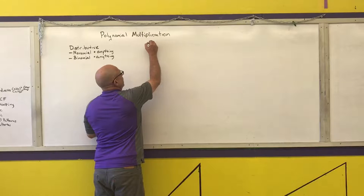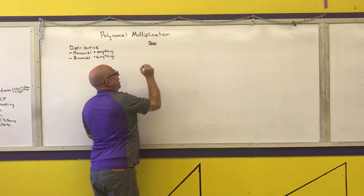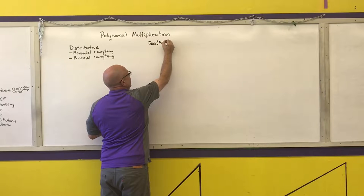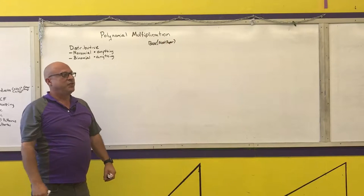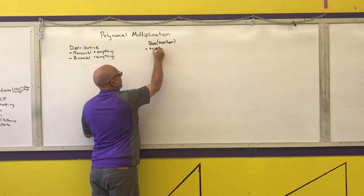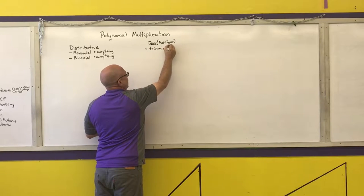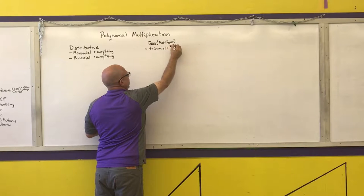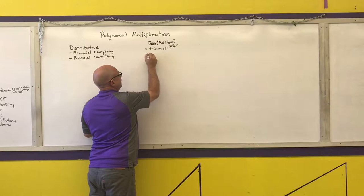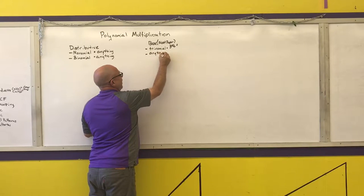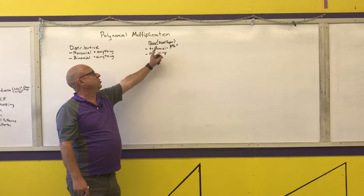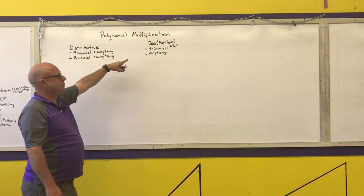The next method is the box method. The box method uses the most paper. My recommendations for using the box method are any trinomial times a third-plus degree polynomial. You can even use it for anything if you want to. My recommendation is if the last method seems confusing to you, use the box method — a lot of students use that.